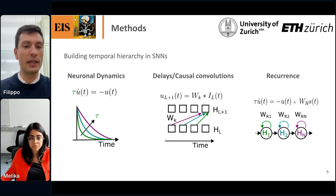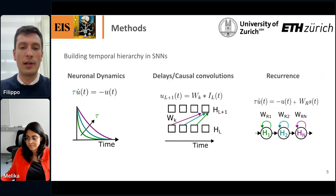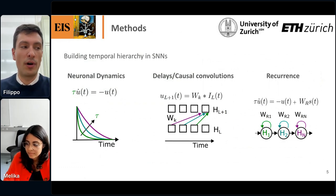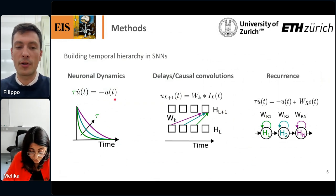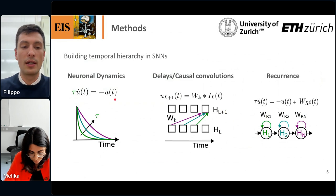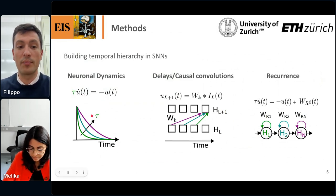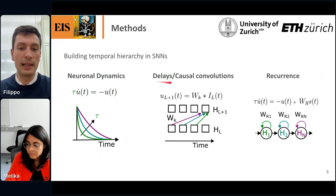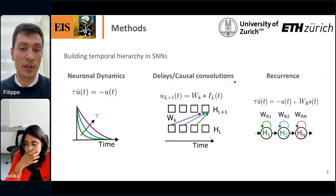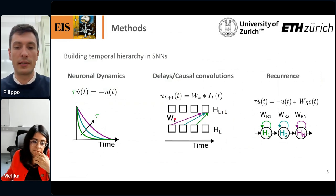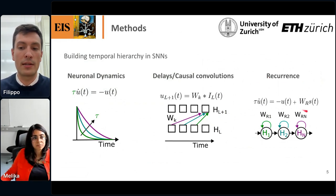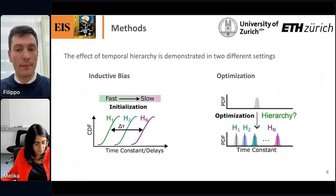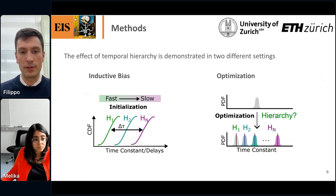How do we build temporal hierarchy in SNNs? There are different mechanisms we can use. The most obvious one involves neuronal dynamics — we can use simple leaky integrate-and-fire neurons, first-order differential equations parameterized by time constants which we can play with. We can also play with delays or causal convolutions, adjusting stride and dilation of convolutional kernels. Additionally, recurrence can be used, as recurrent weights impact the speed of a population of recurrently connected neurons.